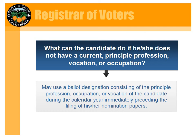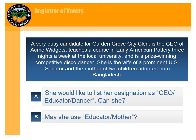We thought it might be helpful to have some short quizzes throughout the presentation. We will present different scenarios and possible ballot designations — think thumbs up or thumbs down. Our first example is a very busy candidate for Garden Grove City Clerk. She is the CEO of Acme Widgets and teaches a course in early American pottery three nights a week at the local university. She is also a prize-winning competitive disco dancer, the wife of a prominent U.S. Senator, and the mother of two children adopted from Bangladesh. She would like to use 'CEO/educator/dancer.' Can she do this? Or what about 'educator/mother'?